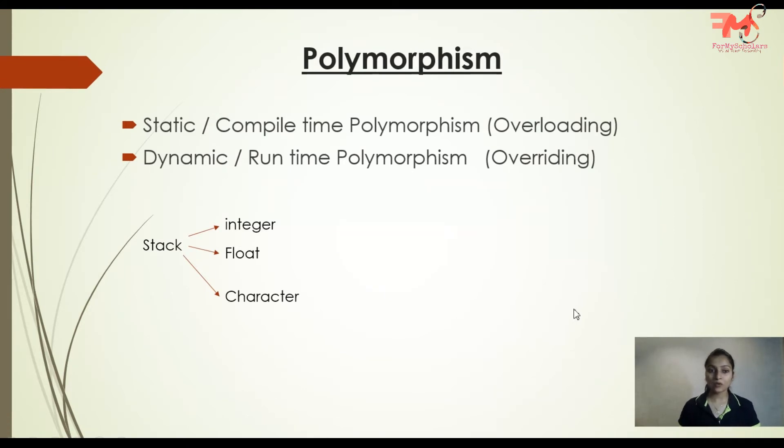But what I want is one stack that holds integer type values, one stack that holds float values, and one stack that implements character type values. So what is the solution? The solution is provided by polymorphism. You can implement a single algorithm, but the data being stored would be different.